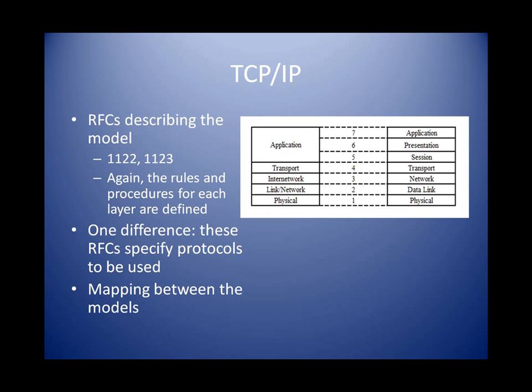If you can't get enough of models, you can go to the RFCs and pick up 1122 and 1123 and they'll tell you all you wanted to know about the TCP/IP model. Just like the OSI model, the rules and procedures are all listed in these RFCs. One big difference between RFCs 1122 and 1123 and X.200 is that the RFCs do specify the protocols to be used on the TCP/IP model. The image on this slide shows a mapping between the two models — the upper three layers of the OSI model map straight across to the application layer of the TCP/IP model.